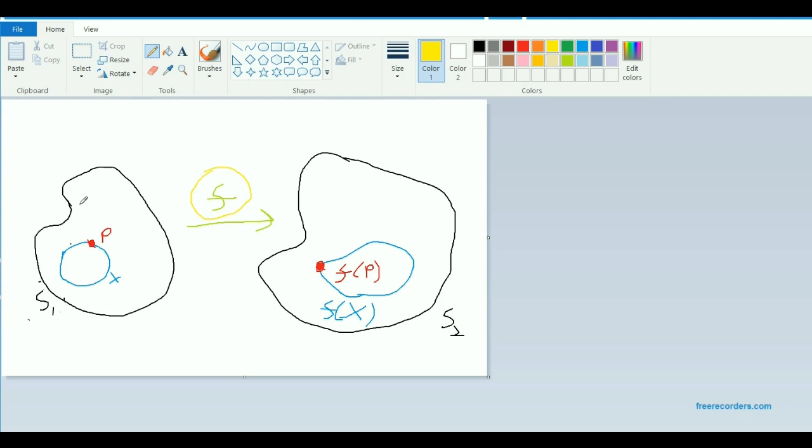what are all the limit points of this subset X? And there's going to be various different limit points. So let's say that P is such a limit point. Well, in this completely generic situation,